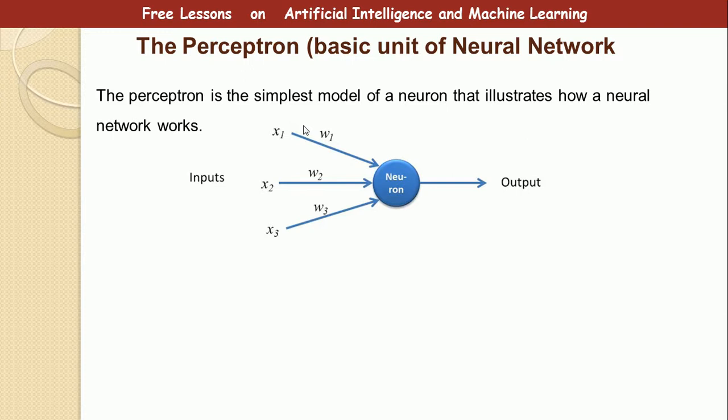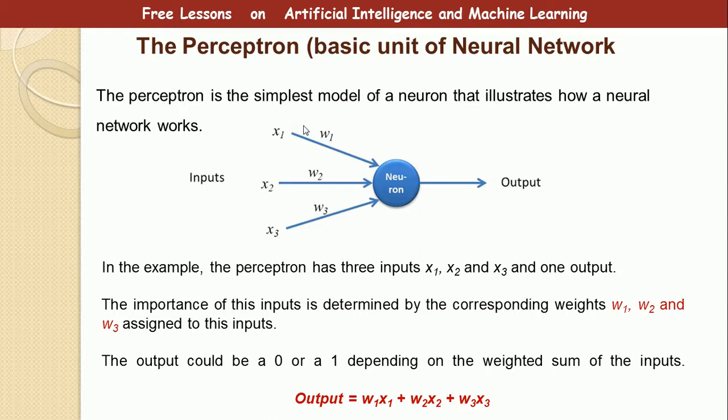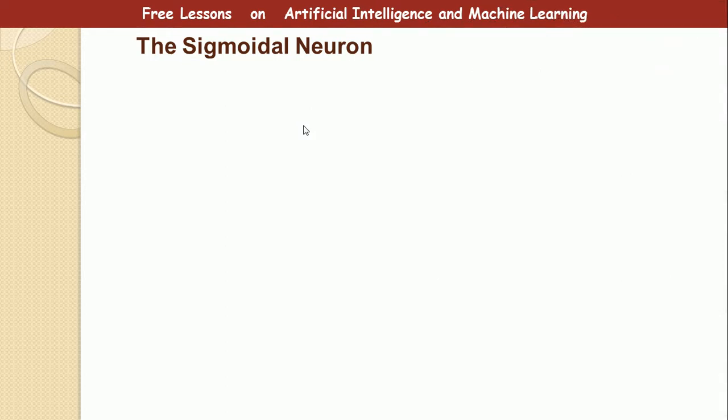So think of a perceptron as a neural network with just one neuron. It has a set of inputs X1, X2 and X3 and a set of weights for the connection W1, W2 and W3. For this particular one, it produces an output. In the example, the perceptron has three inputs and one output. Now, the importance of this is that the corresponding weights as well as the inputs determine the outputs. Sometimes we may need an output to be either 0 or 1. You may have heard of the binary classifier. So you need an output of either 0 or 1. That means that we need to pass this input to a function that would produce either 0 or 1.